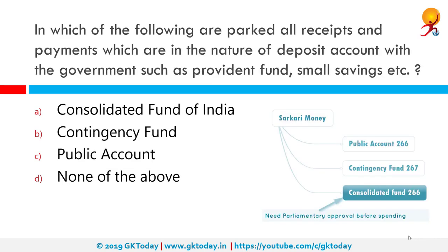In which of the following are parked all receipts and payments which are in the nature of deposit accounts with the government, such as provident funds, small savings, etc.? The correct answer is public account. The public account is constituted under Article 266 of the constitution. All other public money other than those covered under the Consolidated Fund of India, received by or on behalf of the government of India, is credited to the public account of India.